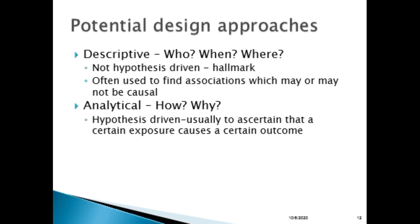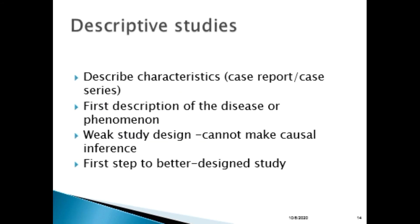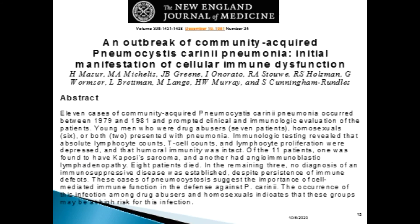Study designs are grouped into two: descriptive and analytic. Examples of descriptive studies include case reports, case series, and cross-sectional surveys. Note that cross-sectional surveys fall into both descriptive and analytical categories. Descriptive designs describe who, when, and where the situation or disease occurred. These are the simplest study designs and a stepping stone to the next set of research designs.